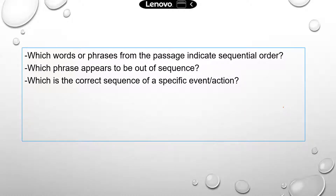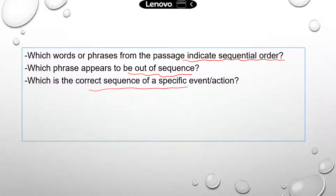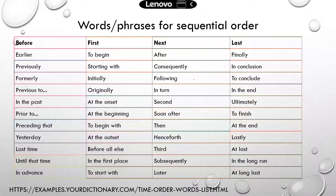Here are some of the common questions that you may see. For example: which words or phrases from the passage indicate sequential order? Which phrase appears to be out of the sequence? Which is the correct sequence of a specific event or action mentioned in the paragraph? Those questions may be a little bit different on the actual test — things may be more specific about the details in the paragraph.